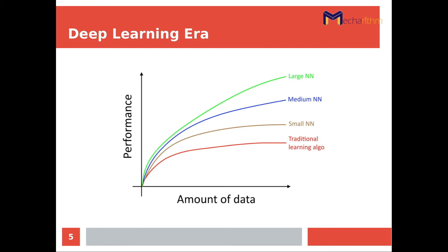So right now we've entered something called the deep learning era, which is a subset of machine learning itself. Here is a curve that explains the relationship between the amount of data we have and the performance, and also the different types of machine learning methods that we use.